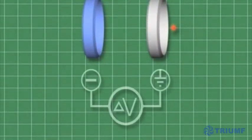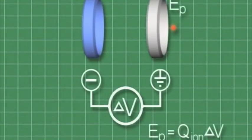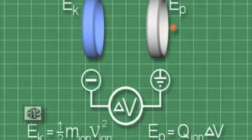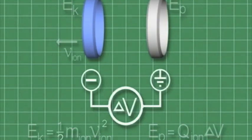The ion beam is first passed through an electric field created by an electrical potential difference. Here, the ion's electrical potential energy is converted into kinetic energy.